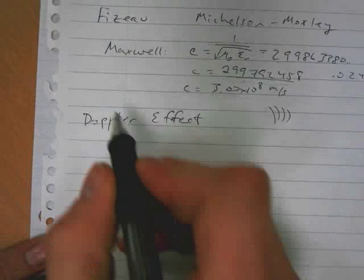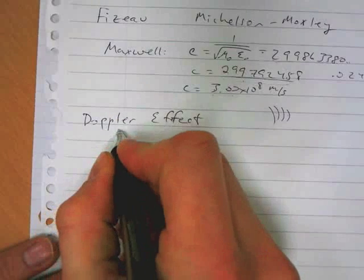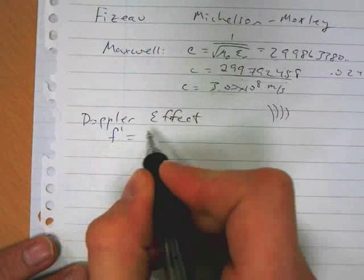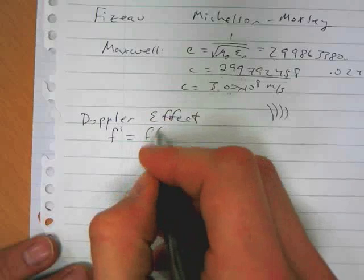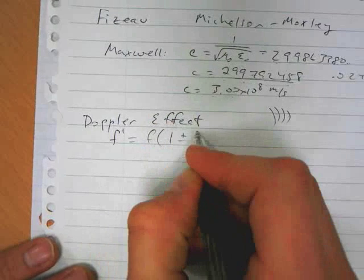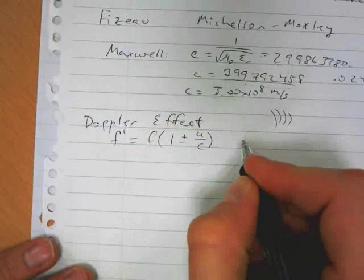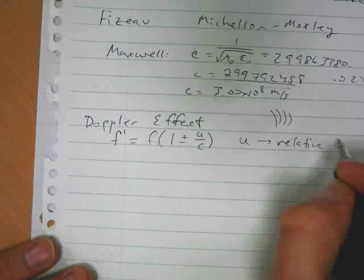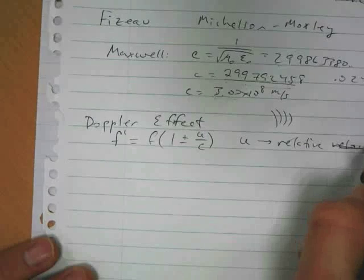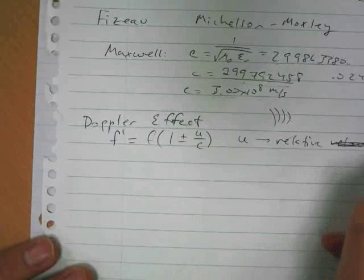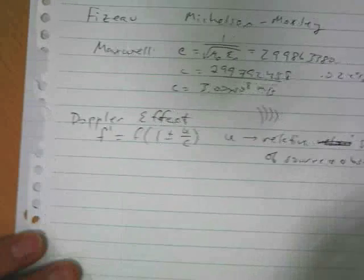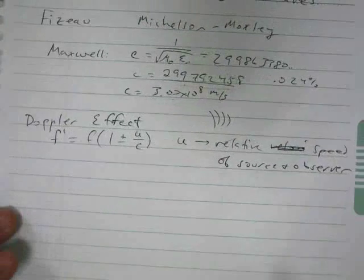For the Doppler effect with light, the frequency, the change in frequency, or the new frequency, is equal to the original frequency times 1 plus or minus u over c, where u is the relative velocity or speed of the source and the observer. And c, of course, is the speed of light.